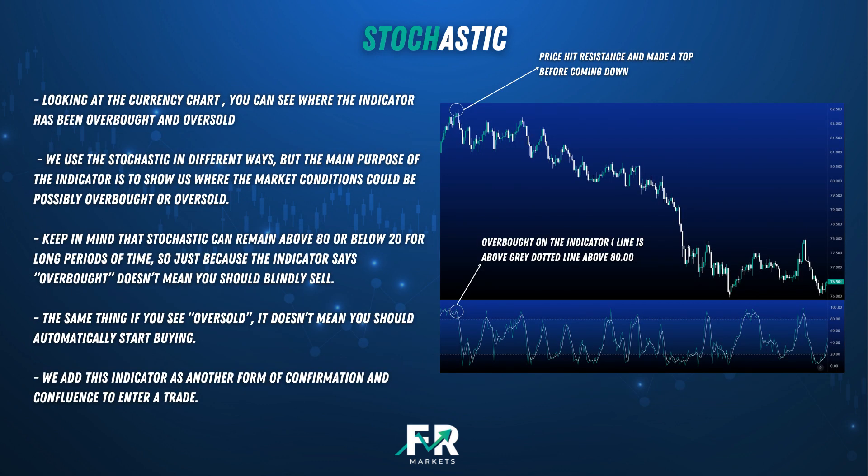Looking at the currency chart, you can see where the indicator has been overbought and oversold. We use the Stochastic in different ways, but the main purpose of the indicator is to show us where the market conditions could be possibly overbought or oversold. Keep in mind that the Stochastic can remain above 80 or below 20 for long periods of time. So just because the indicator says overbought doesn't mean you should blindly sell, and if you see oversold it doesn't mean you should automatically start buying. We add this indicator as another form of confirmation and confluence to enter a trade.